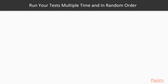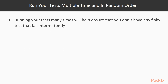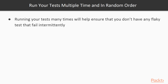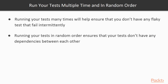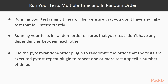Make sure you run your unit tests multiple times and in a random order. Running your tests many times will help ensure that you don't have any flaky tests that are failing intermittently. Running your tests in random order ensures that your tests don't have dependencies between each other. You can use the pytest-random-order plugin to randomize the execution of the tests, and pytest-repeat for repeating all or a subset of the unit tests as needed.